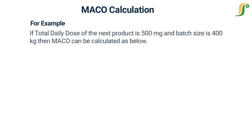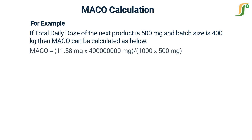For example, if the Total Daily Dose of the next product is 500 milligrams and the batch size is 400 kilograms, the MACO can be calculated as: MACO = (11.58 mg × 400,000,000 mg) / (1000 × 500 mg).